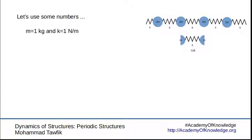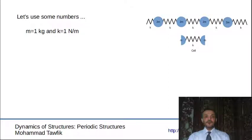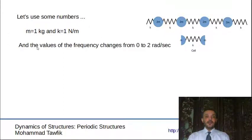Just to make things clearer, let's use some numbers here. If we used the mass is equal to one kilogram, while the stiffness is equal to one Newton per meter, of course, the number one is easy to handle. We change the values of frequencies from zero to two radians per second and see what happens.